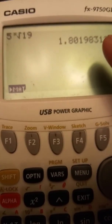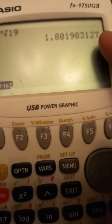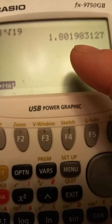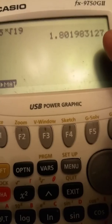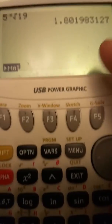Now the thing about this graphing calculator is if you have a result on the screen, whatever you do right now, it will take that number and apply what you do. So you have 1.801983127 on the screen.